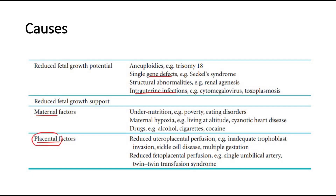Multiple gestation can also result in the sharing of uterine vascularity, causing a reduction in blood flow to each placenta of the two or more fetuses. On the fetal side of the placental circulation, abnormalities of the umbilical cord, such as a single umbilical artery, are also associated with FGR.